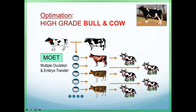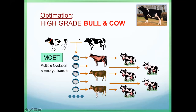We stimulate the donor cows and then do artificial insemination or natural mating, obtaining embryos by superovulation treatment. We can get more than five or ten embryos, then transfer the embryos to recipient cows that have the same cycle as the donor at the time of embryo collection. We will get calves with the genetics from this high-grade bull and cows, using surrogate mothers.